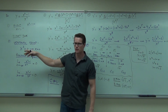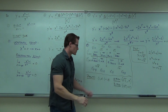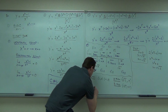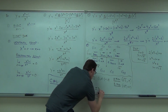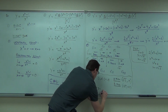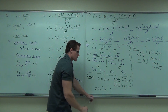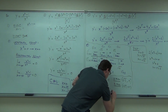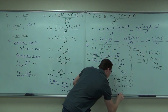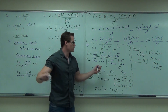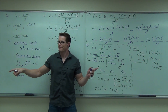Now let's do the root sixes — the root sixes are my inflection points. Negative square root of six and square root of six. Somebody plugged in the negative square root of six — how much did you get? About one point.